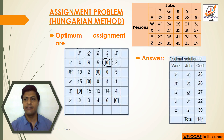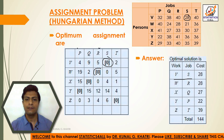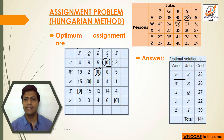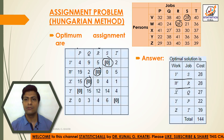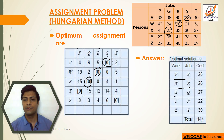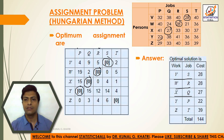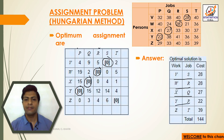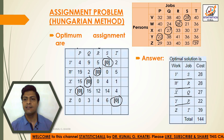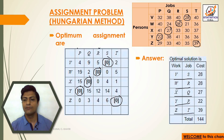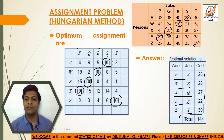Now calculate the total minimum cost using the original matrix values. V to S = 28, W to R = 28, X to Q = 27, Y to P = 22, Z to T = 39. The total minimum cost is 28 + 28 + 27 + 22 + 39 = 144.